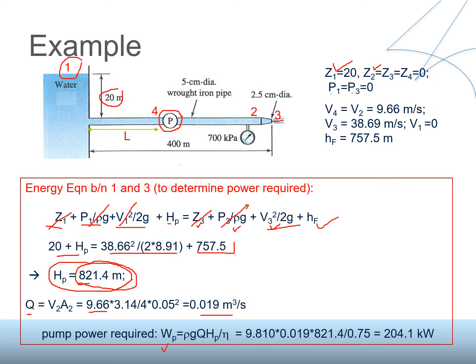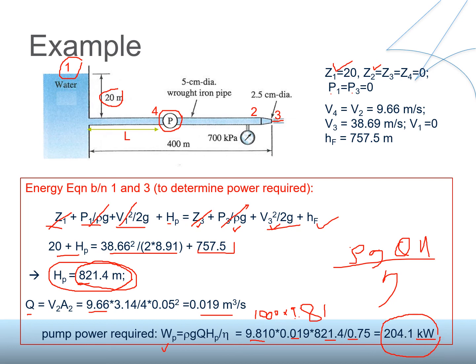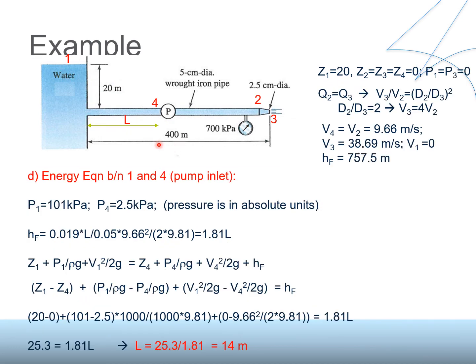Pump power is calculated as P = ρ·g·Q·H / η. Using ρg = 9.81 kN/m³, Q = 0.019 m³/s, H = 821.4 m, and efficiency η = 0.75, we convert directly to kilowatts: P = (9.81 × Q × H) / η = 204 kW.